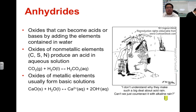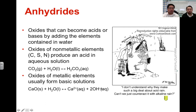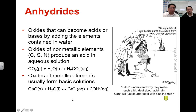We also have anhydrides. Anhydrides are oxides that can become acidic or basic when you add them to water. Oxides of nonmetallic elements will produce acids — for instance, carbon dioxide and water will make carbonic acid. Oxides of metallic elements will form basic solutions — for instance, calcium oxide with water forms calcium hydroxide, which immediately dissociates because it's ionic. That's a classic Arrhenius base with the formation of hydroxide ions.